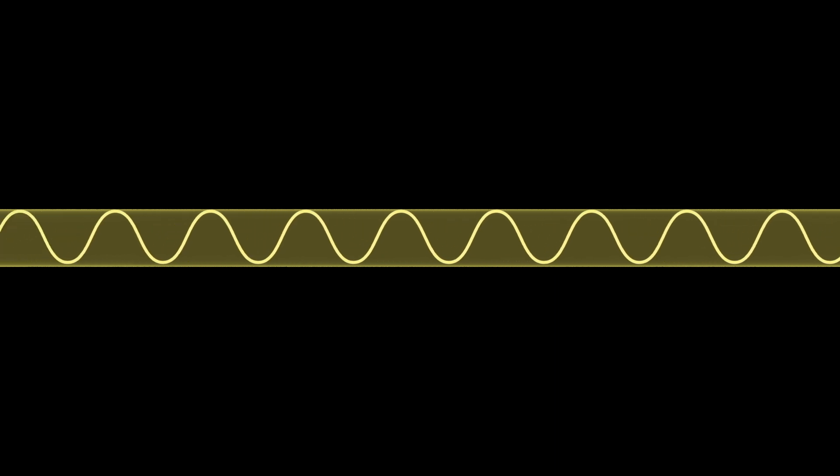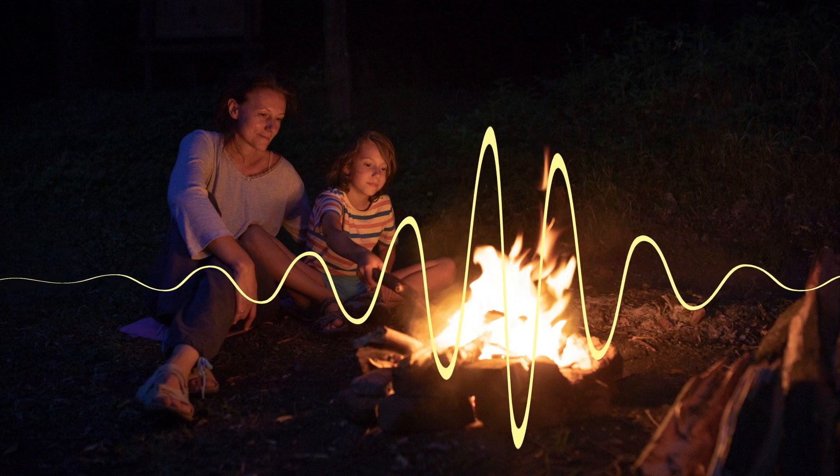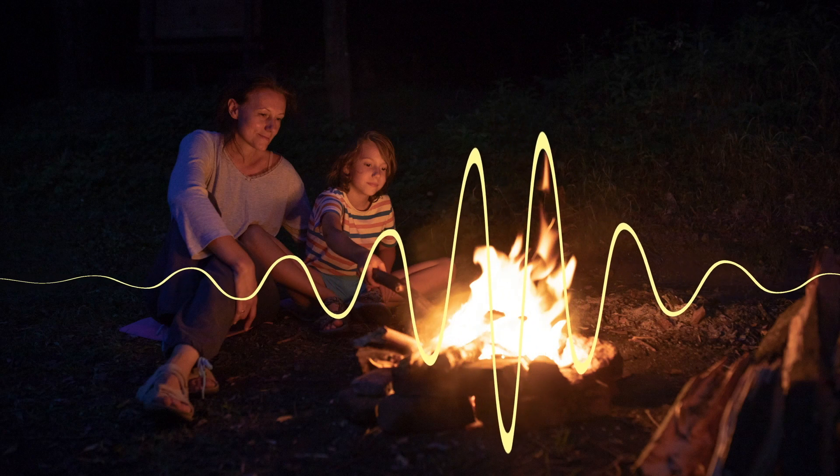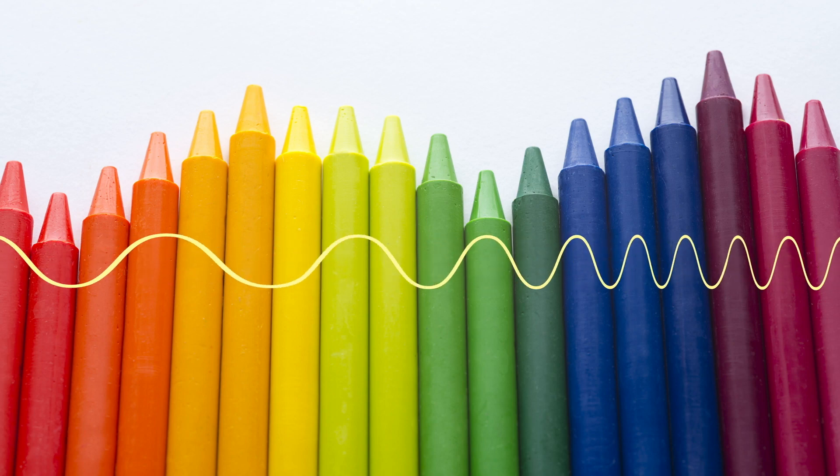Light behaves like a wave. Brightness is expressed as amplitude. Colour is expressed as wavelength.